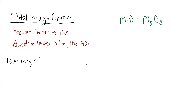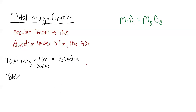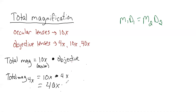We're going to multiply by 10x, because that's our ocular lens, and then multiply that times the power of our objective lens. So if we want to find the total magnification of our 4x lens, we will take 10x times 4x — simple as that — which gives us a 40x total magnification.